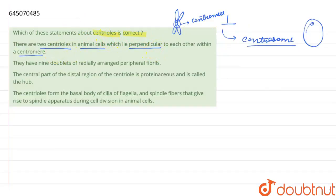The second statement is: they have nine doublets of radially arranged peripheral fibrils. Now these peripheral fibrils are also made up of protein tubulin, and these are not nine doublets but instead triplets. So this statement is also incorrect.